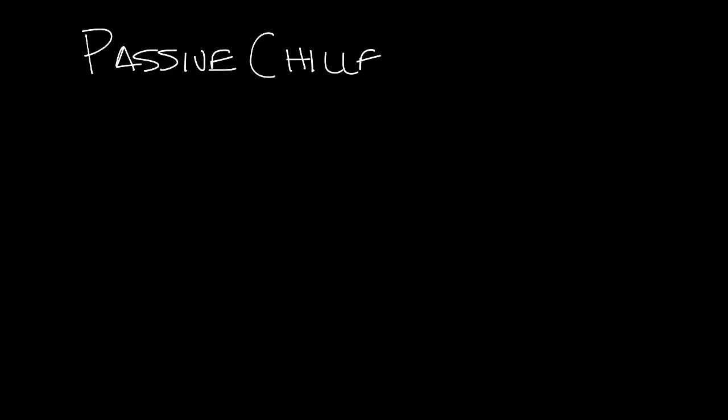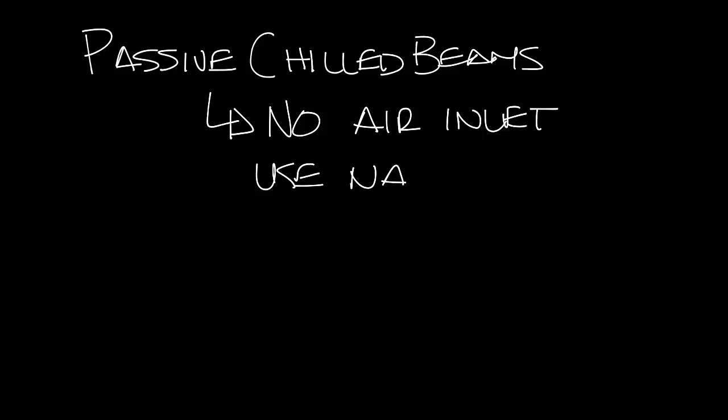Passive chilled beams have no supply air inlet. They use natural convection currents to cool the space, and a separate system is used to provide the ventilation air for the space.